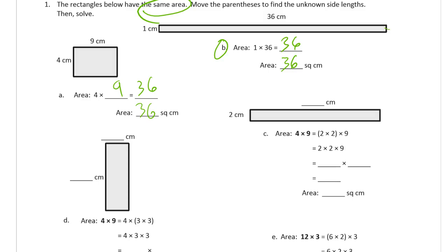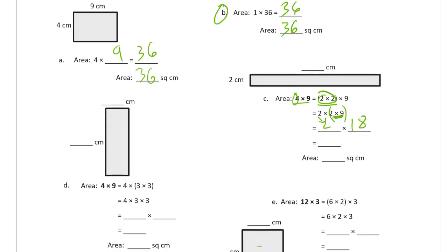For 36, you can see that's 2 times 2 times 9. Taking 4 times 9 and thinking of the 4 as 2 times 2, if we move the parentheses from the left pair to the right pair, we have 2 times (2 times 9). That 2 times 9 is 18, so we have 2 times 18, which equals 36 square centimeters.